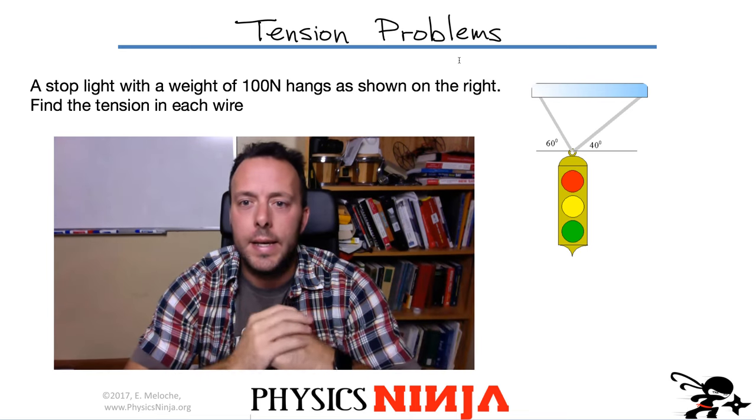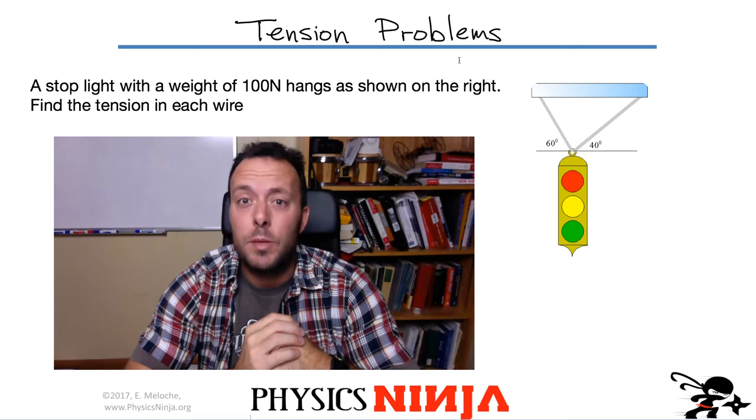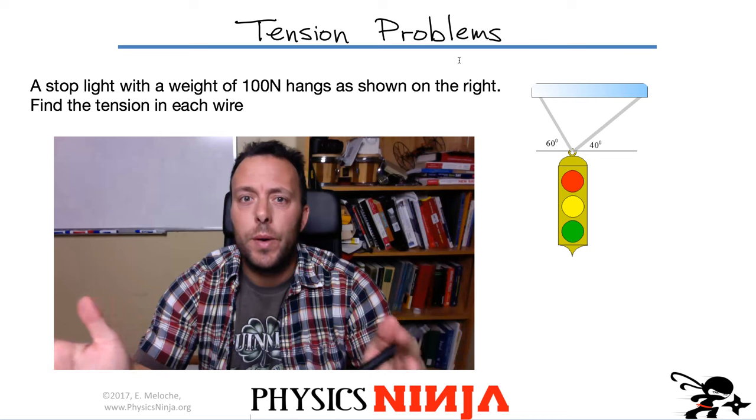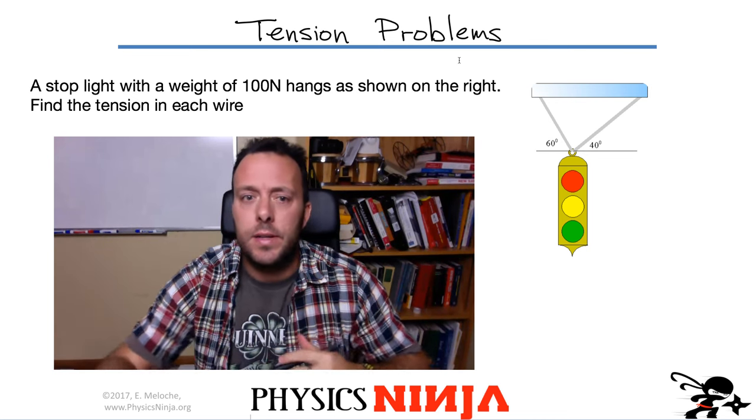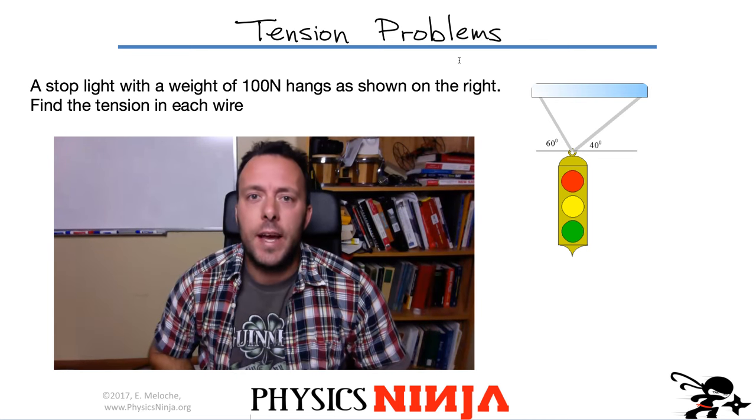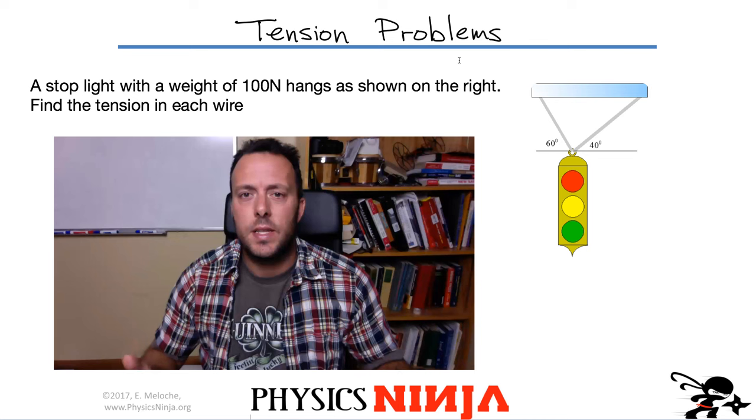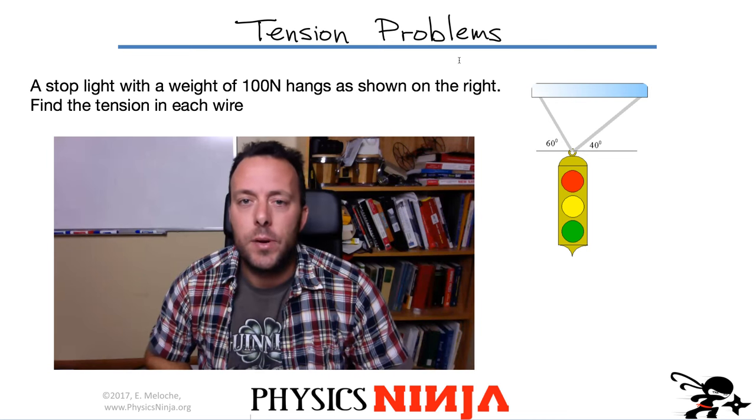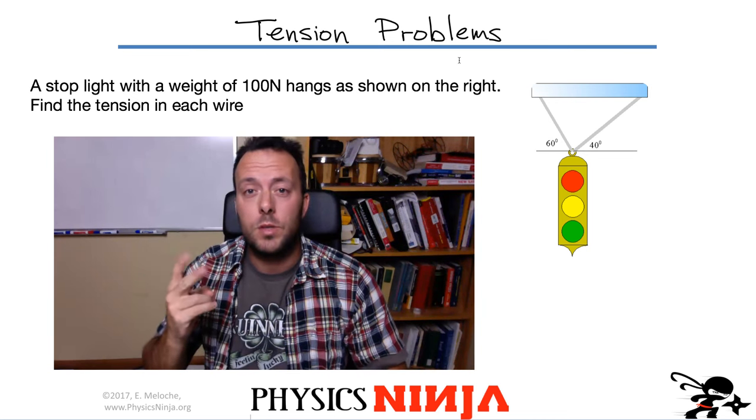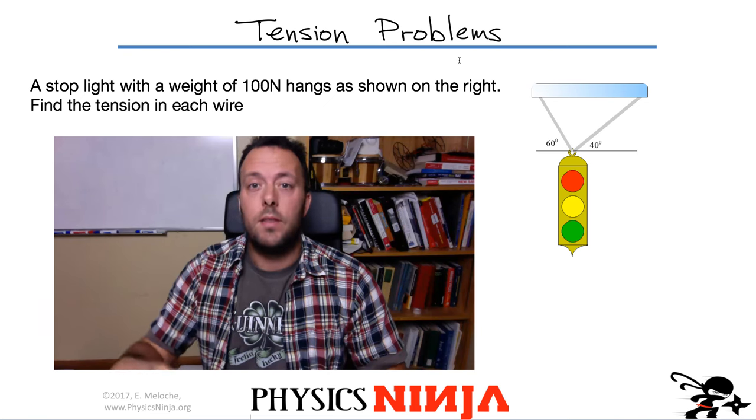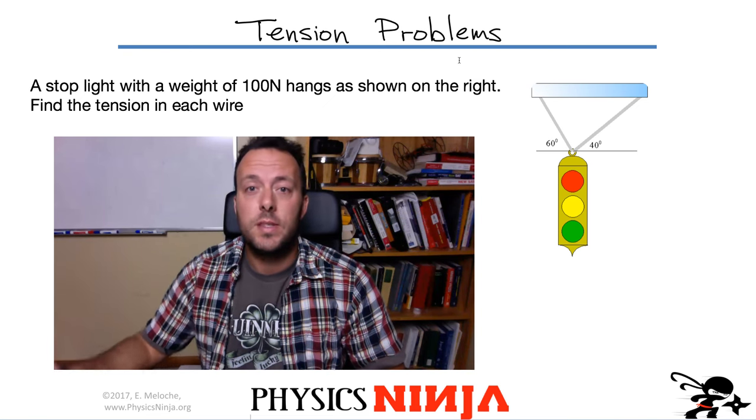Hi everyone. Tonight I want to look at a standard tension problem. We have a stoplight here with a weight of 100 newtons shown here in the diagram. I want to find the tension in each wire. I'll show you how to set this problem up and how to solve the equations we're going to get. This is a two-dimensional problem so we have to set up two equations and then solve for the two unknowns.